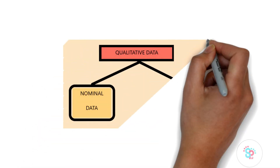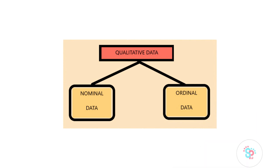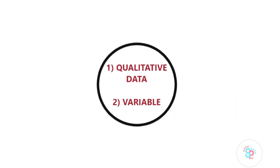Nominal data. As I said before, nominal data is one of the subdivisions of qualitative data. Nominal data are the data collected in nominal variables. So it's crucial for us to understand what nominal variables are first. Before learning the ordinal and nominal concepts, please be aware of what qualitative data is and what a variable is.